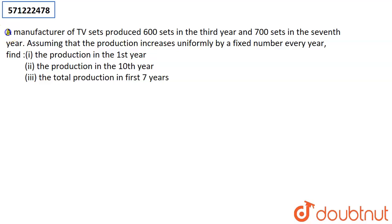Hello guys, today we are given that a manufacturer of TV sets produced 600 sets in the third year and 700 sets in the seventh year. Assuming that the production increases uniformly by a fixed number every year, find (i) the production in the first year, (ii) the production in the tenth year, and (iii) the total production in the first seven years.